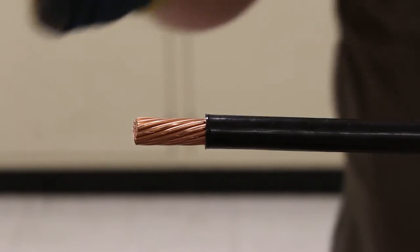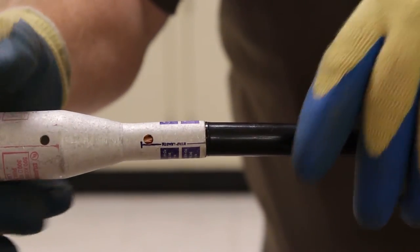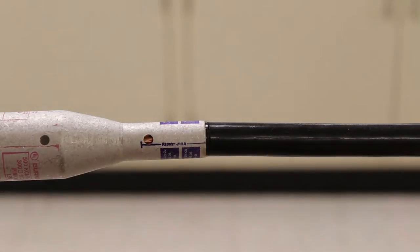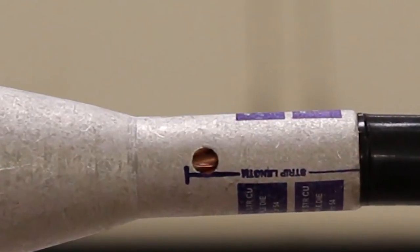Once you have stripped the wire, insert the cable into the connector. Insert the connector in the die and ensure the cable is fully inserted. The cable strands must be visible through the inspection holes.